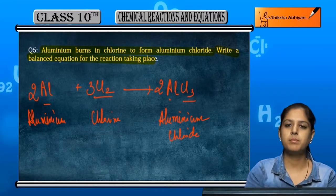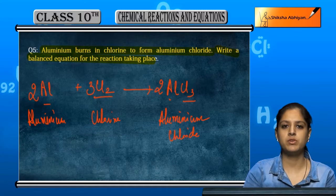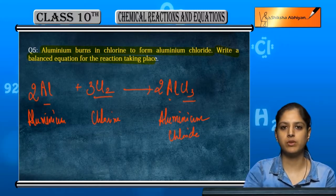So this is the balanced equation of aluminium reacting with chlorine to form aluminium fluoride.